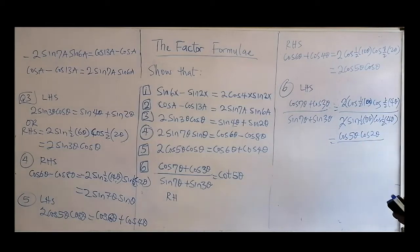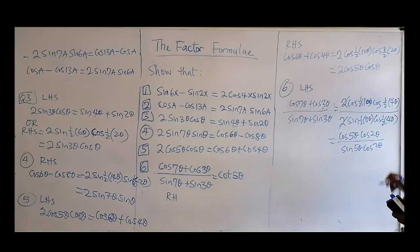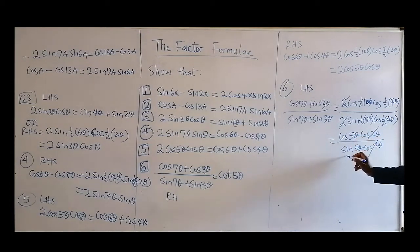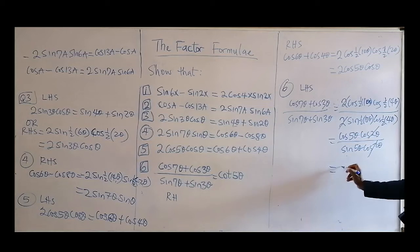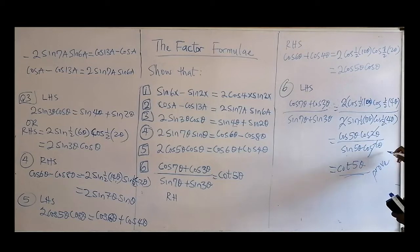The 2's cancel, and cosine over sine is... Well, cos(5θ) divided — let me leave this simplification. Cosine over sine is cotangent, so that equals cos(5θ). And that is the proof. We've done that — that's the proof.